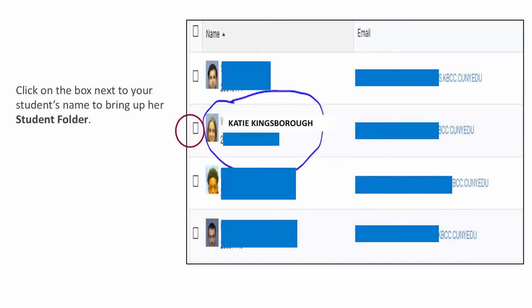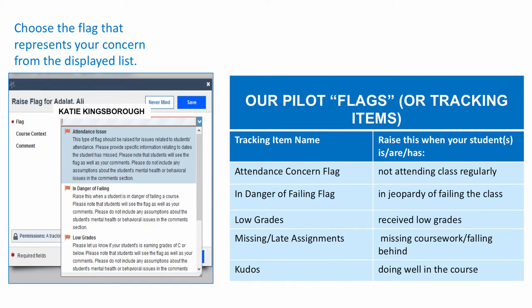Check the box next to the student name that you would like to raise a flag for. Choose the flag that best fits your concern. For our pilot, the flags you can choose from are: an attendance flag if a student is not attending your class regularly; an in danger of failing flag if the student might not successfully complete your course; a low grades flag if the student has received low grades; a missing or late assignments flag if the student is missing work or falling behind; and a kudos flag to recognize students that are doing well in your course.